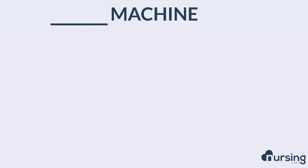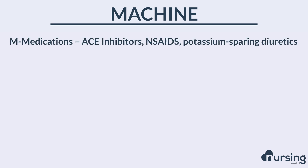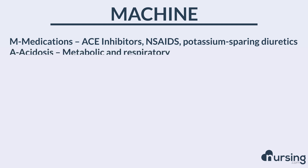The mnemonic we use to determine the causes of elevated potassium is MACHINE. M stands for medications — these are the types of medications that can cause an increase in blood potassium. These are ACE inhibitors, NSAIDs, and potassium-sparing diuretics.